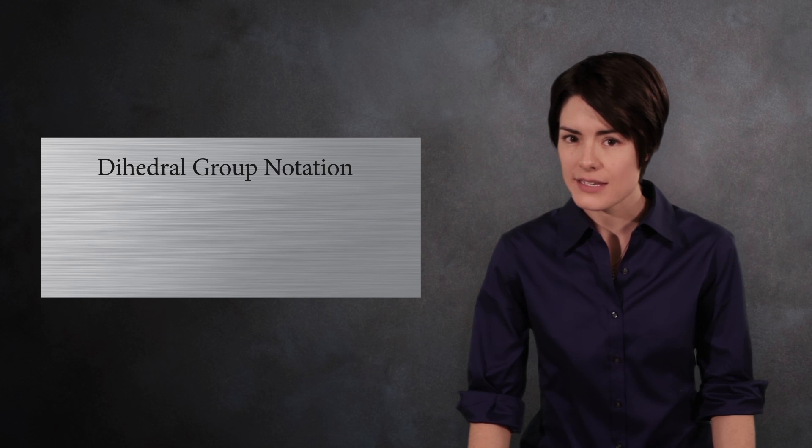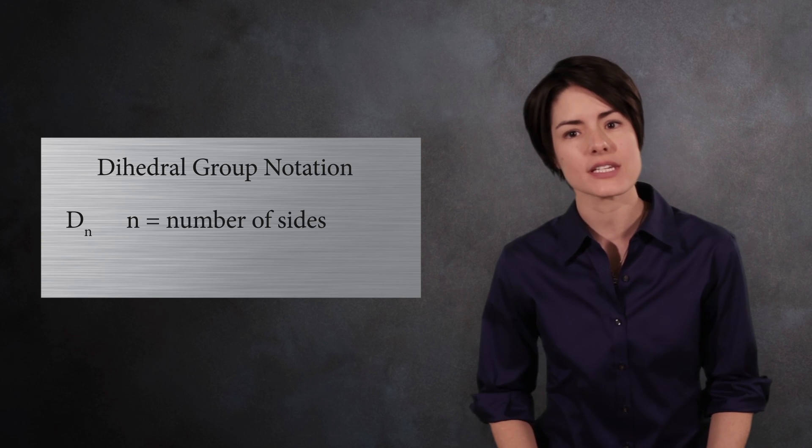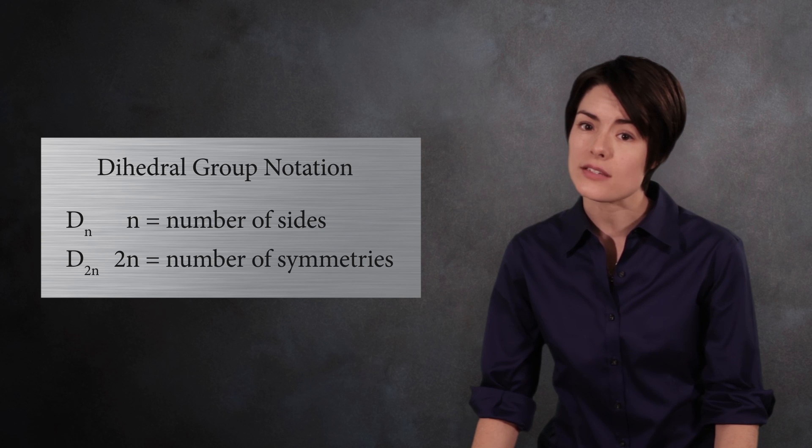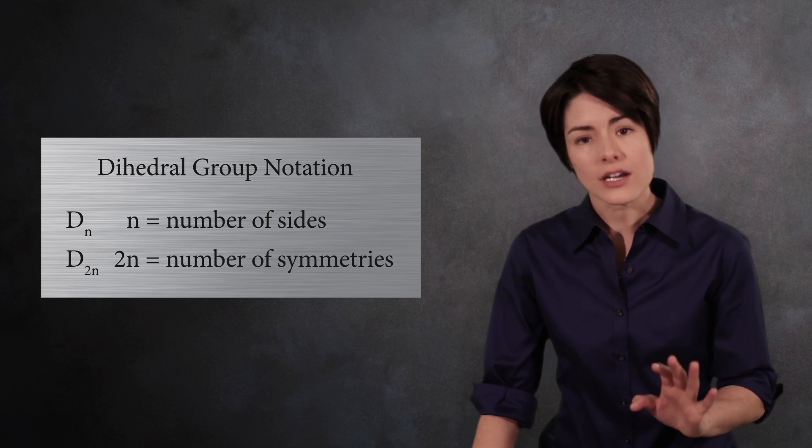Unfortunately, there are two competing notations for the dihedral group. Some people write D sub n to indicate the number of sides of the polygon. Others write D sub 2n to highlight the number of elements in the group. So be careful.